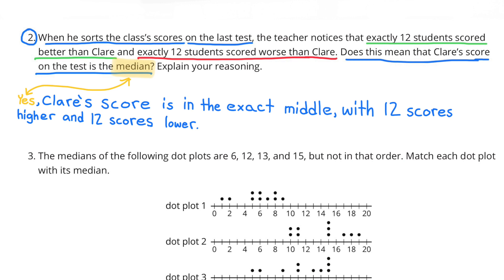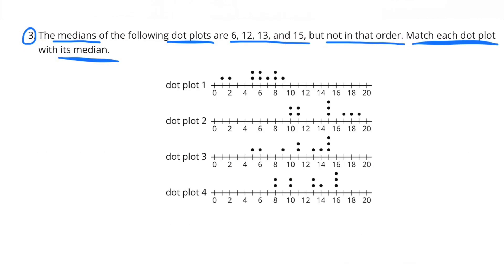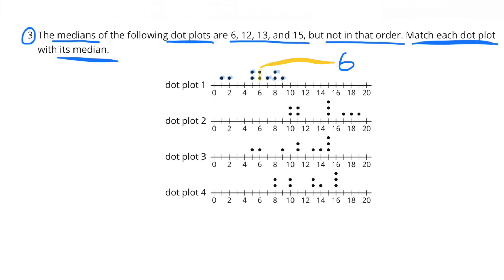Number three: The medians of the following dot plots are 6, 12, 13, and 15, but not in that order. Match each dot plot with its median. Dot plot number one, we cancel out all four of the scores to the right of the six and all four of the scores to the left of the six, leaving just the two scores in the middle. So the median of all the test scores for dot plot number one is six.